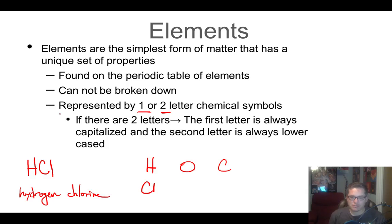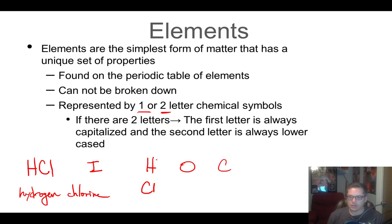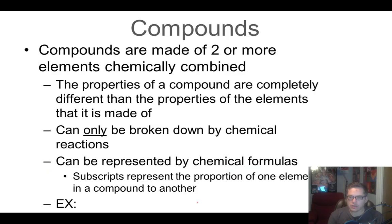The second letter of a chemical symbol is always lowercase, and the first letter is always capital. For example, lead is Pb — capital P because it's the first letter, lowercase b for the second letter.